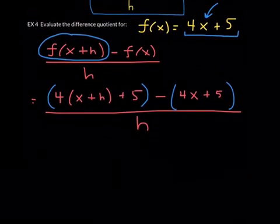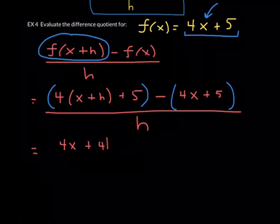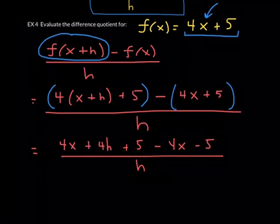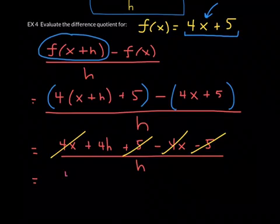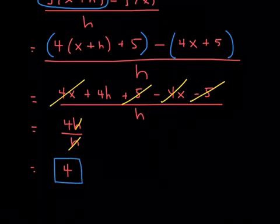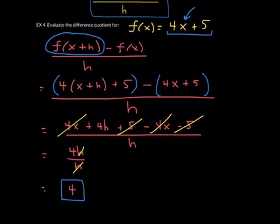Now simplify. Distribute the 4 to get 4x plus 4h plus 5. Distribute the negative to get minus 4x minus 5. Everything is over h. The 4x and negative 4x cancel, and the 5 and negative 5 cancel, leaving 4h over h. Dividing out the common factor of h gives a final answer of 4. The difference quotient for the function 4x plus 5 is 4.